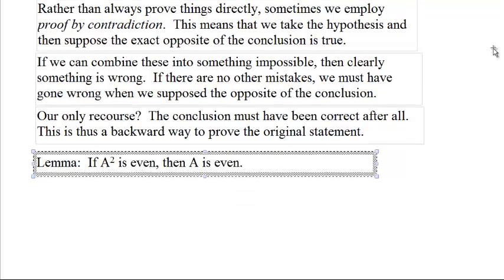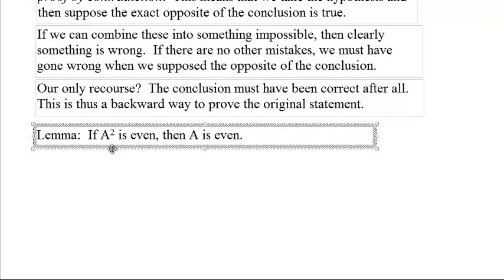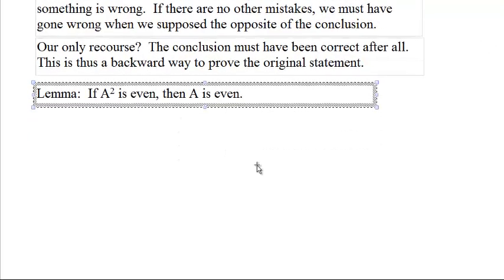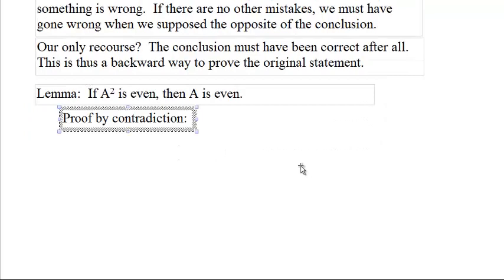Let's do an example. This is a lemma that we're going to use later on. It's not terribly exciting, but it will be very, very useful. If a squared is an even number, then a is an even number. Well, proof by contradiction. What does that mean?